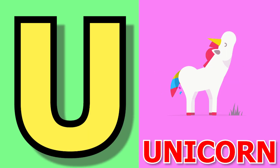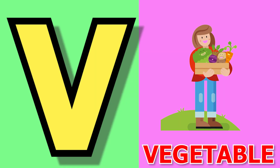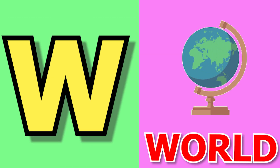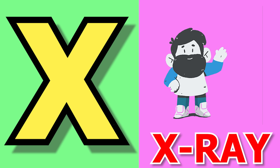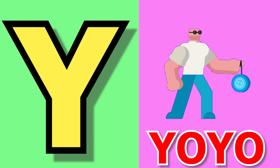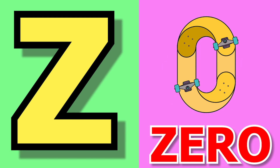U for unicorn, unicorn means unicorn. V for vegetable, vegetable means subji. W for world, world means dunya. X for x-ray, x-ray means x-ray. Y for yo-yo, yo-yo means yo-yo. Z for zero, zero means shunya. Bye bye!